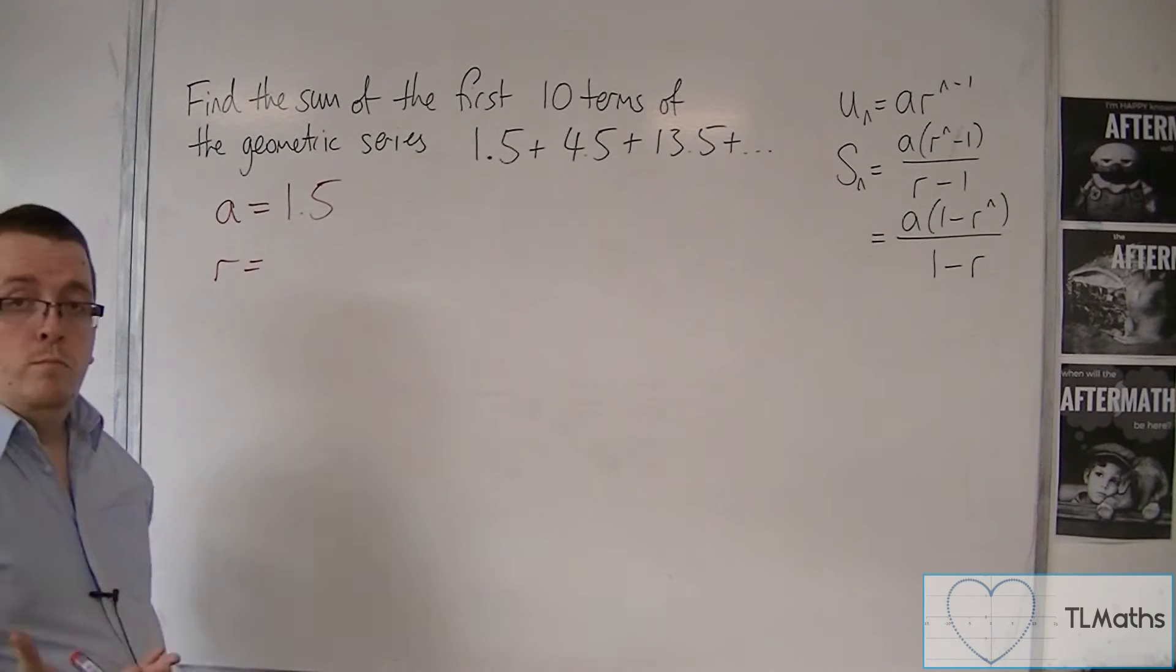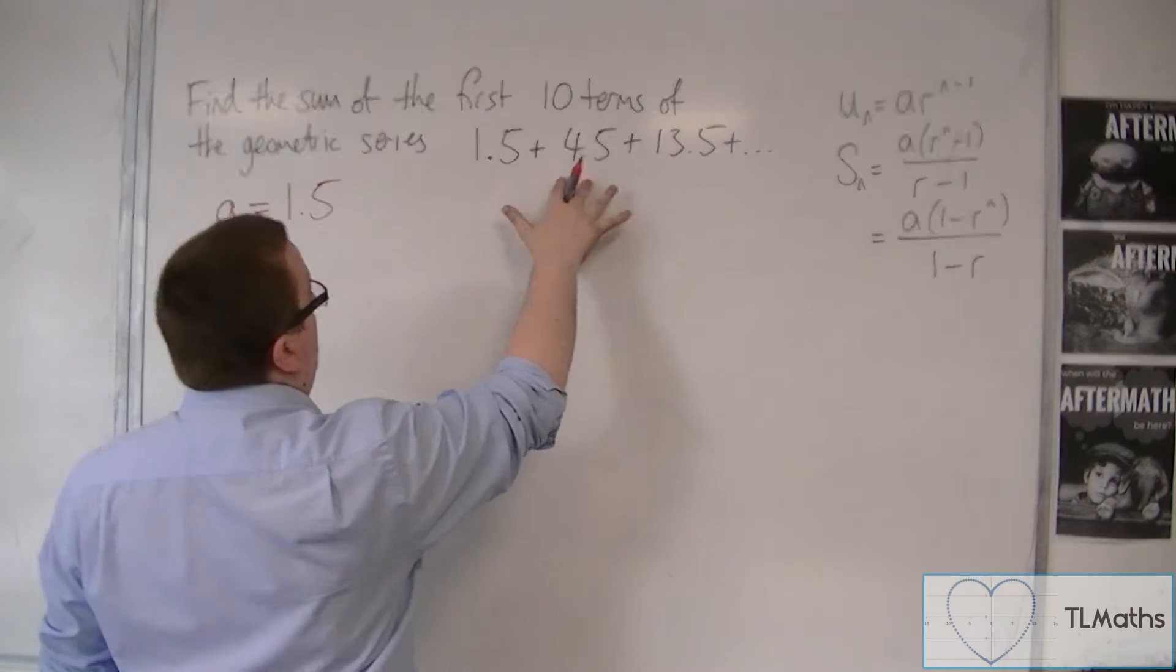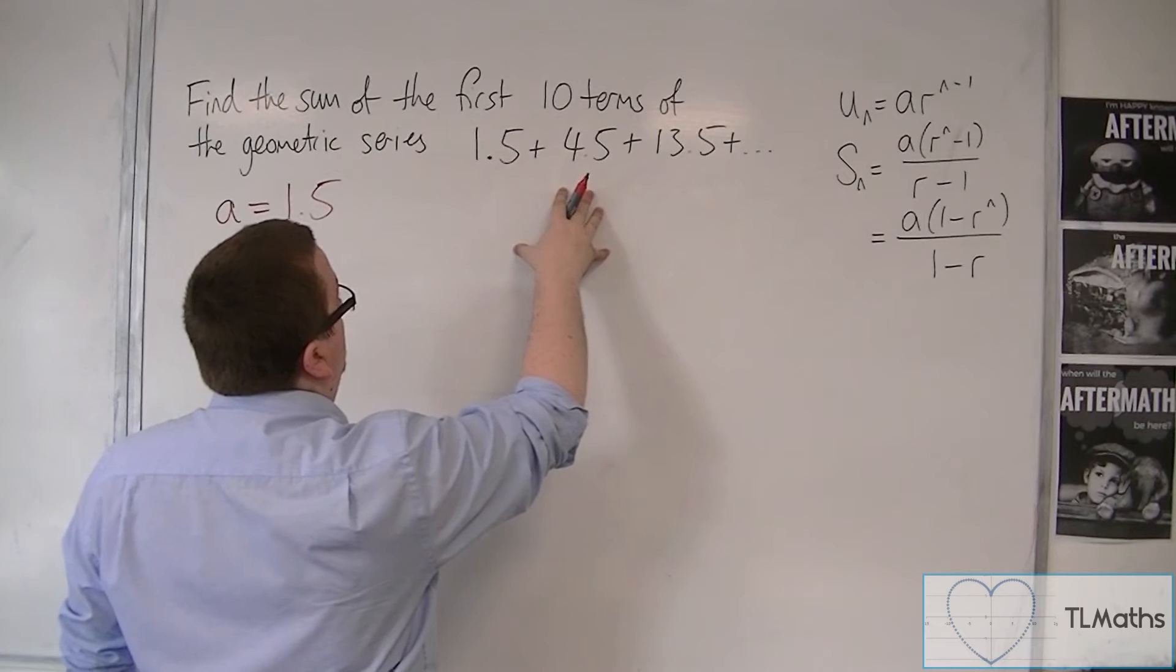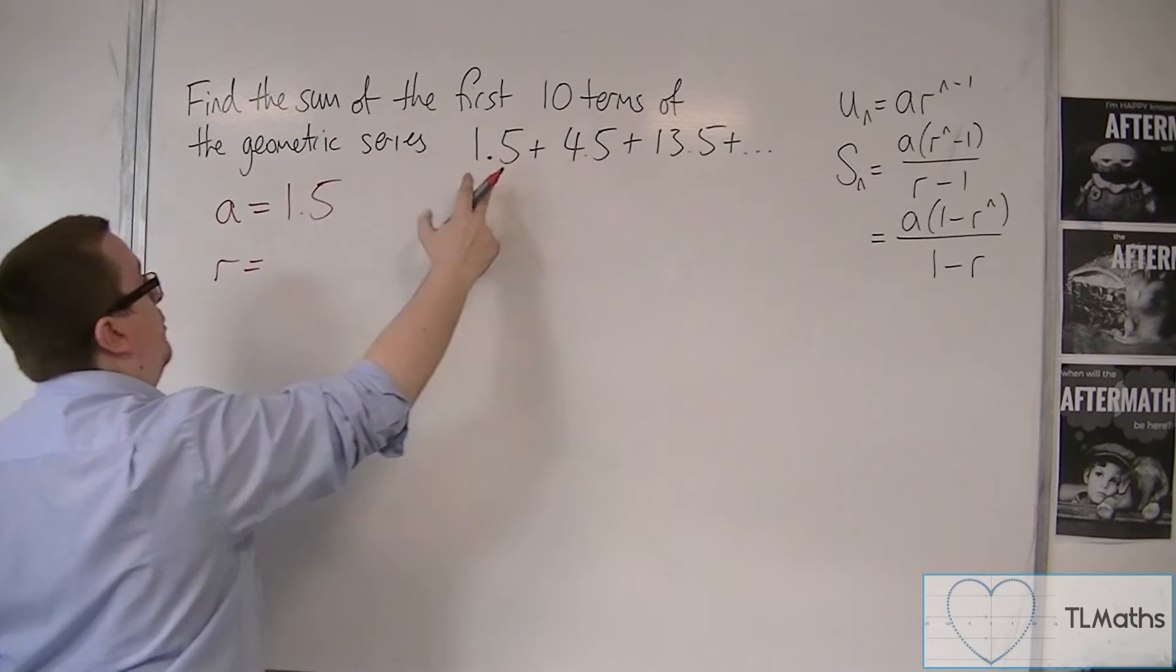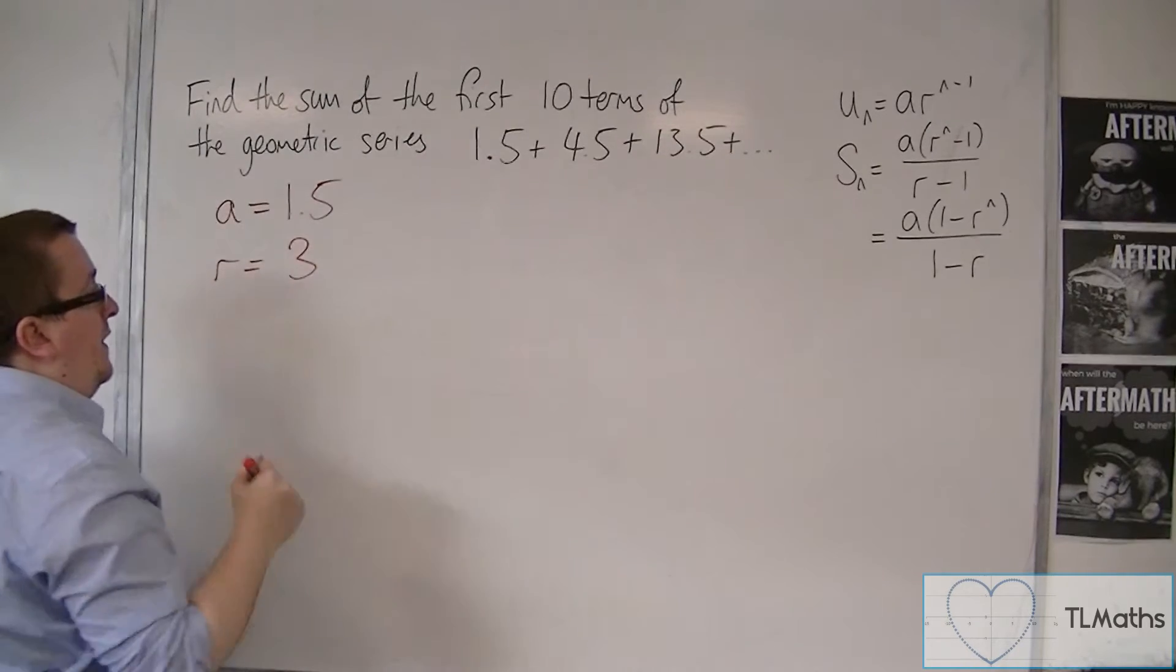you could probably spot already, is going to be 3. I'm multiplying by 3 each time, or you can spot that by doing 4.5 divided by 1.5, as I showed earlier. So that's 3.